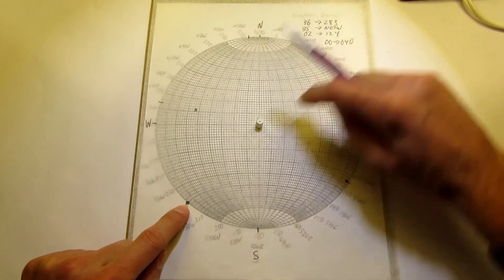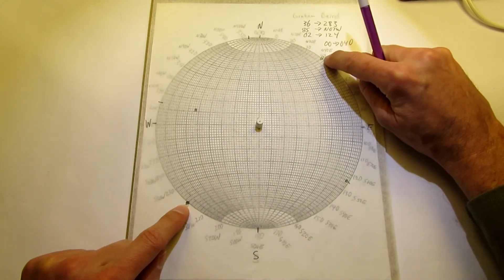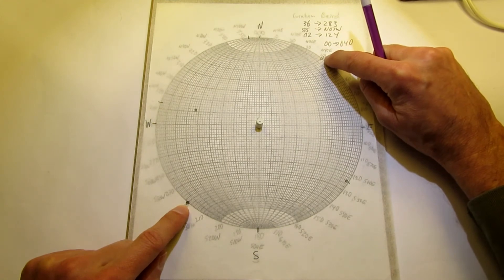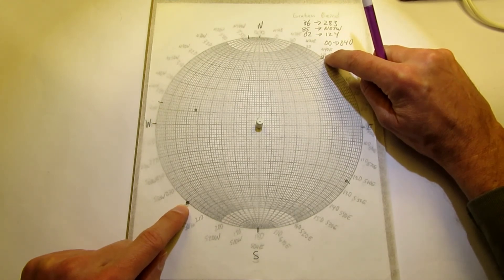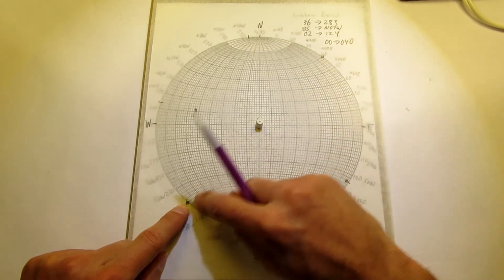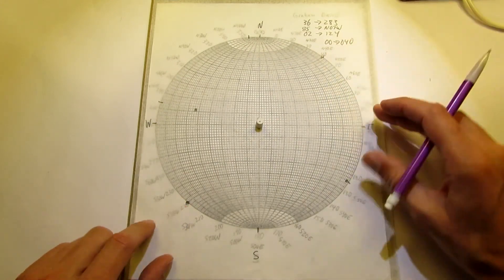Depending on what you're doing, you may decide that you only want one side of those, of that lineation. But it's certainly permissible to plot it on both sides 180 degrees away.